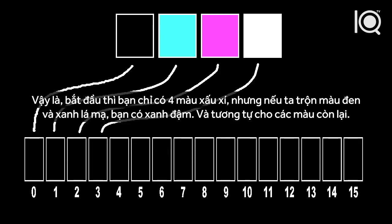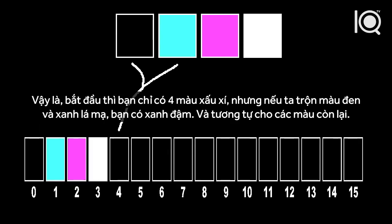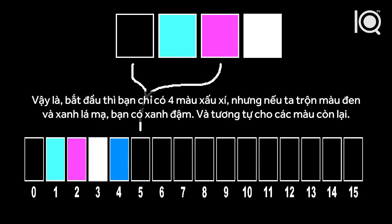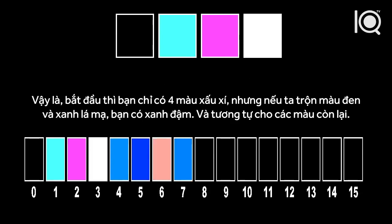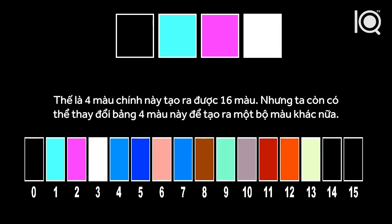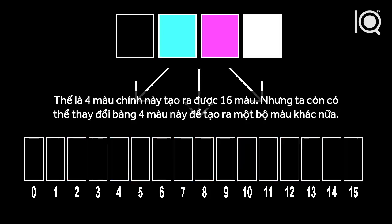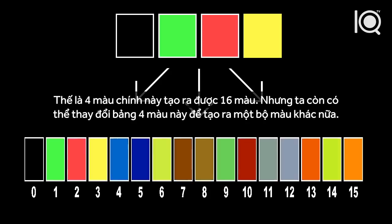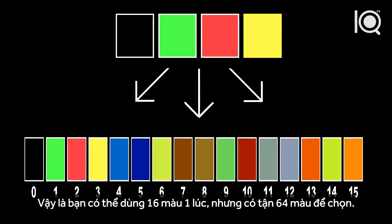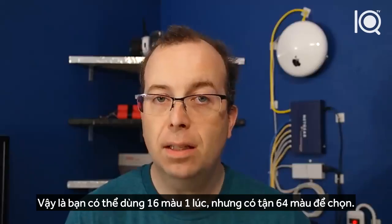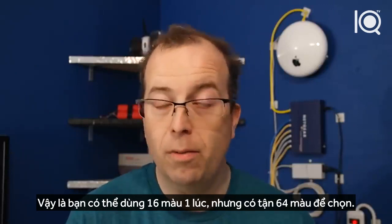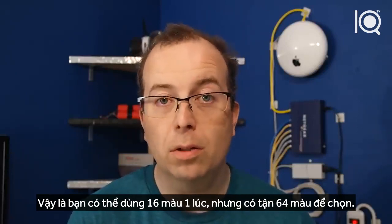So you start off with your 4 ugly primary colors, but if you mix black and cyan, you get blue. If you mix black and magenta, you get dark blue, and so on. So these 4 primary colors are used to create 16. But you can change the primary palette to one of the other ones and you get a whole different set of colors. So you can have 16 colors on screen at once, out of a palette of about 64 colors to choose from.